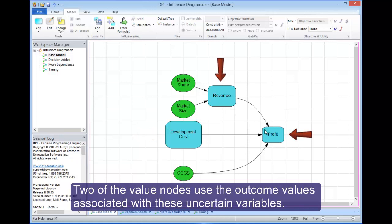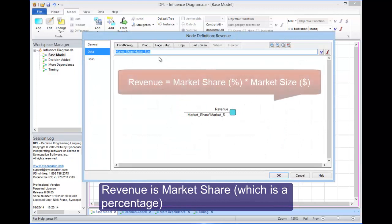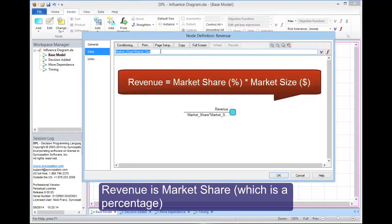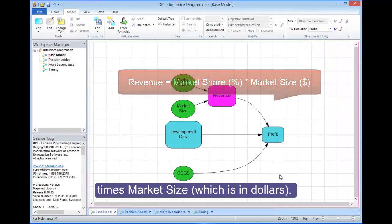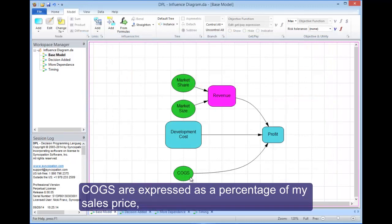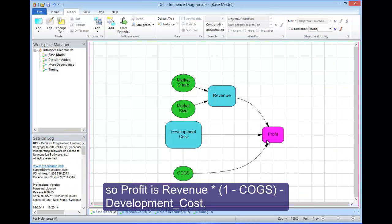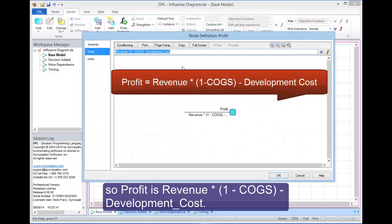Two of the value nodes use the outcome values associated with these uncertain variables. Revenues is market share, which is a percentage, times market size, which is in dollars. COGS are expressed as a percentage of my sales price, so profit is revenue times one minus COGS minus development costs.